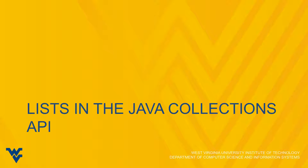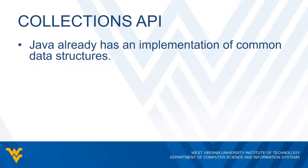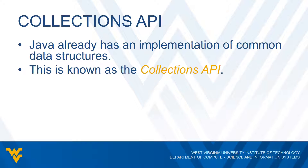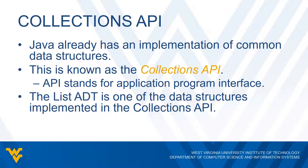We're now going to take a look at how we could implement lists in Java by using the Collections API. One of the benefits with Java is that it already has an implementation of some of the common data structures or common abstract data types. This is what we call the Collections API. The list abstract data type is one of these types of data structures that's already given to us in the Collections API.